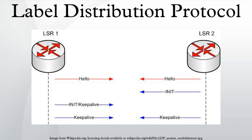Unlike traffic-engineered paths, which use constraints and explicit routes to establish end-to-end label switched paths, LDP is used only for signaling best-effort LSPs.